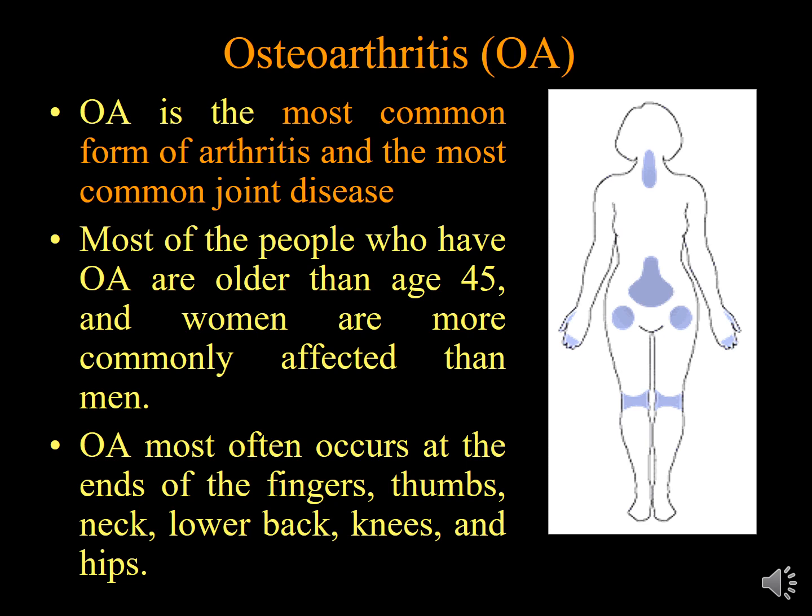Osteoarthritis is a very common disease — the most common musculoskeletal complaint worldwide. Most of the population after the age of 50 complain of pain or problems in the knee related to Osteoarthritis, especially women more than men. Osteoarthritis often occurs at the ends of the fingers, small joints of the hand, thumb, neck, lower back, knees, and hips. These are the joints commonly affected by Osteoarthritis.